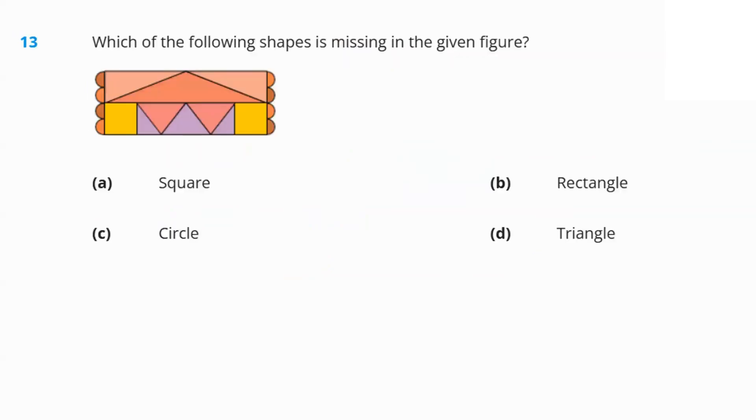Next, which of the following shapes is missing in the given figure? Do we have a square? Yes. The yellow portion, that's a square. Do we have a rectangle? Yes. This whole thing is a rectangle. Do we have a circle? No. We don't find circles anywhere. These are semi-circles. So, option C, circle is missing.